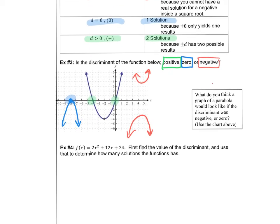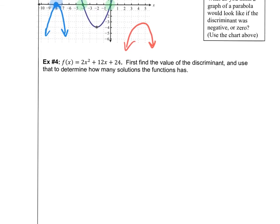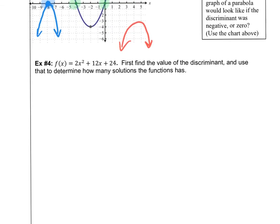Okay, moving on. Let's do this problem together. Example 4. It says, gives us a function, and it says find the value of the discriminant. So that's one of the things we need to do. Find the value of the discriminant, and use that to determine how many solutions the function has. Okay, so the discriminant, we'll do this in two parts.